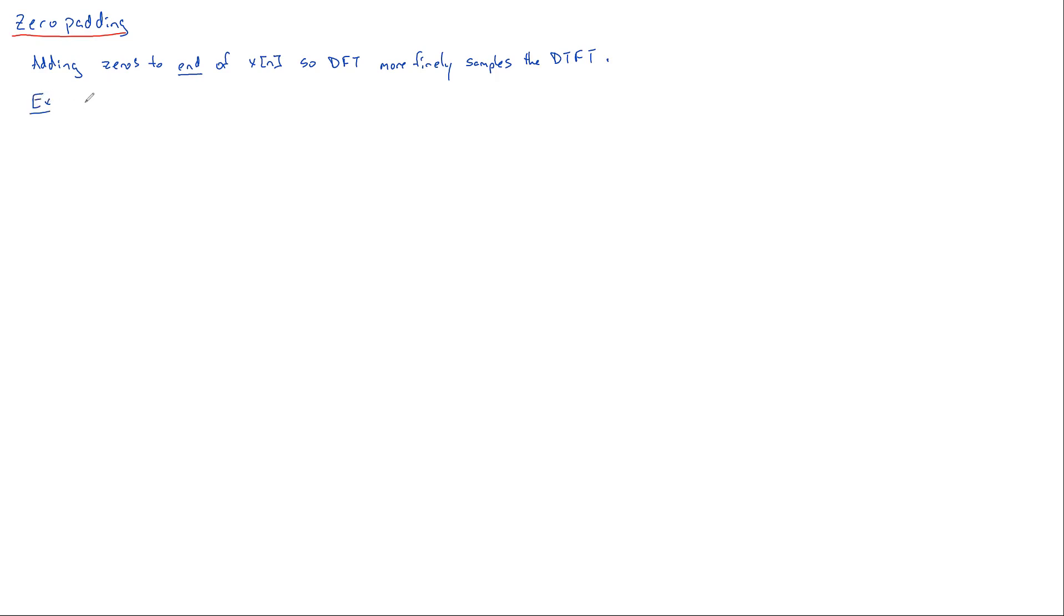As an example in MATLAB, if we have a vector x that's already defined, our x padded might be just equal to x with a bunch of zeros at the end. Then our next step might be to say that our DFT of that is calculated in this way, and this DFT will more finely sample the underlying DTFT associated with this signal than the DFT of the unpadded signal.